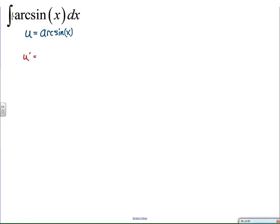Now, I chose u to be the arcsine instead of letting u equal one, for multiple reasons. The first reason, though, is I know the derivative of the arcsine.